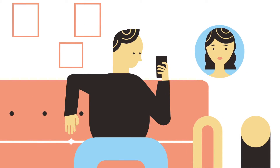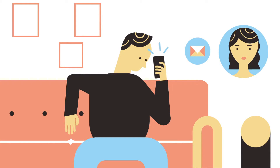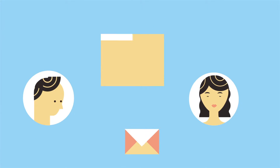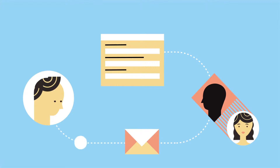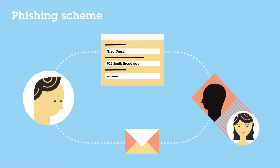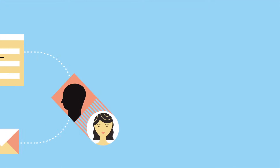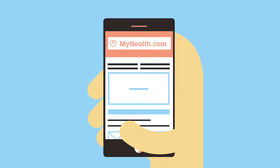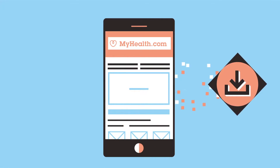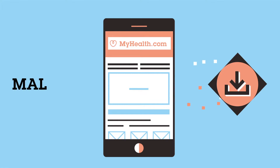Let's look at one. Greg gets an email that he thinks is from his friend Sonia, recommending a mobile healthcare application. Seems harmless enough, but what Greg and Sonia don't know is that her email has been hijacked in an elaborate phishing scheme. Phishing is the attempt to gain sensitive information by masquerading as a trusted source. Unaware, Greg clicks on the healthcare email link and is directed to a site that mimics the actual healthcare site.